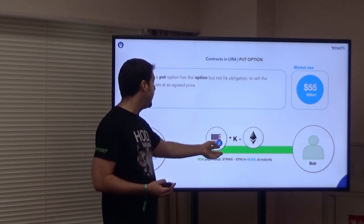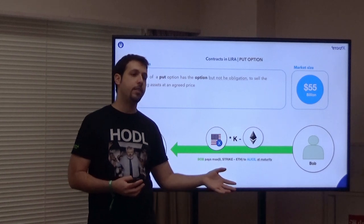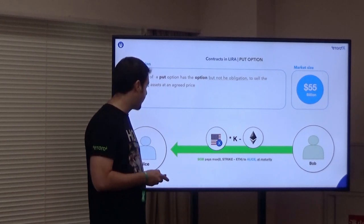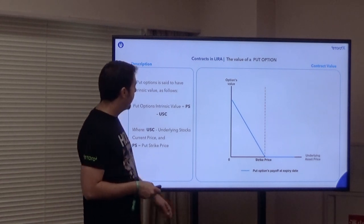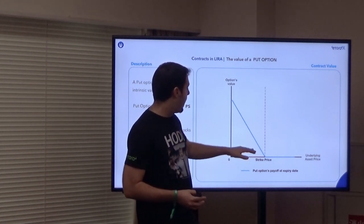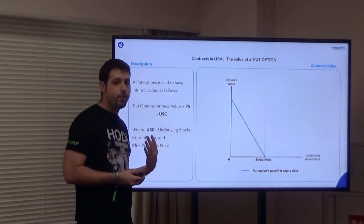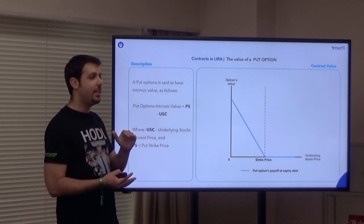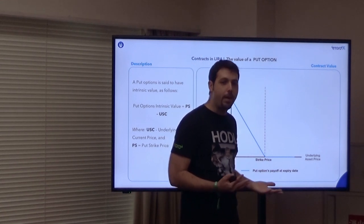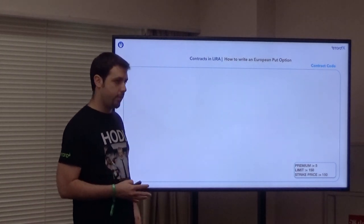With a put option you get a different kind of hockey stick — your maximum loss is K, whatever the strike price is, and it goes linear on the other side. It can be used for both speculation and hedging. Similar to the call option, the intrinsic value tells you how much value you'd have if you exercised it at a specific time. If the price is going down you'll probably want to exercise it. The code is very similar to the previous one: the maximum of 0 and 150 minus the observable price, and you wait one month.